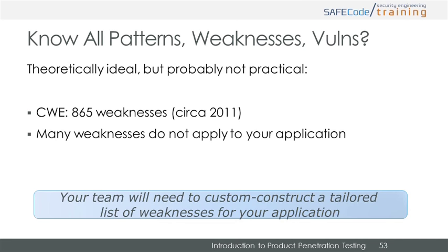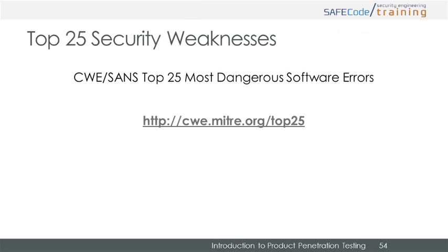Often an important question comes up: is it expected that every validator will memorize or understand every known weakness that exists in the world? While it is theoretically ideal for validators to know every possible weakness, there are just too many to make that practical — there are 865 software weaknesses alone. It makes more sense for validation teams to go through the weakness lists to figure out which weaknesses apply to their target, thereby tailoring the list to their specific needs. But even that can be a daunting task. If you still don't know where to begin, you should at a minimum review and cover the top 25 most prolific security weaknesses. SANS and MITRE cooperate to produce a yearly summary of the most common weaknesses at the CWE website. All software validation teams should be aware of and covering the items in the top 25 weakness list.